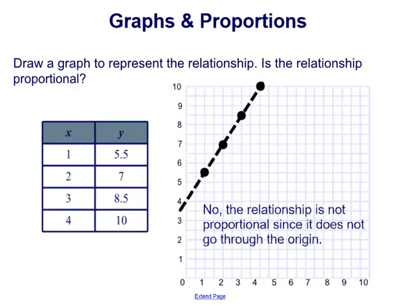So you should be able to answer that yes, you can form a line through the points. But however, the line does not pass through the origin. It would have to pass through the point 0,0, and you can see your line is too high. It looks like it's passing through 0,4. So no, the relationship is not proportional because it does not go through the origin.